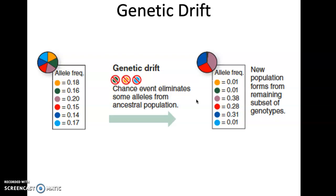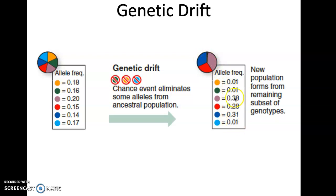Now, what about genetic drift? Going back to the pie charts, let's say you had allele frequencies fairly evenly distributed among six different types of alleles. All of a sudden, a chance event eliminates some of these alleles from the ancestral population. What used to show all these different alleles is now much more limited — some allele frequencies drop to 0.01. That new population formed from the remaining subset of genotypes is called genetic drift.